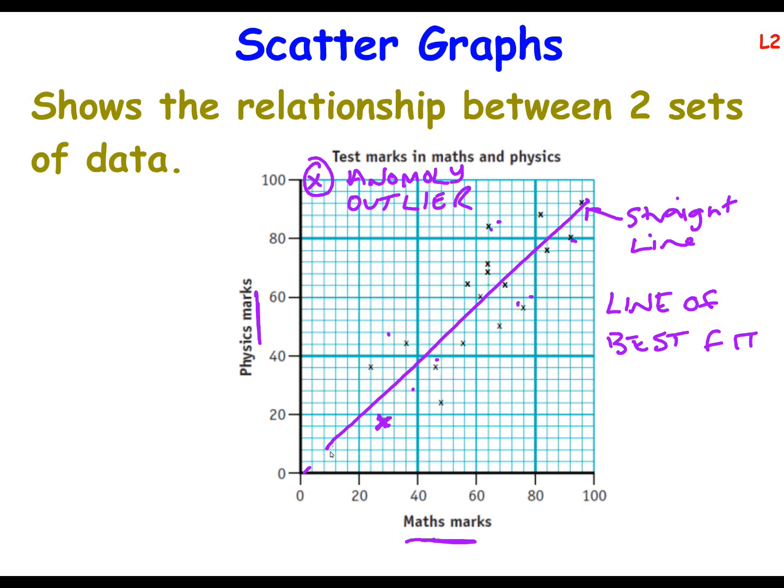Now this trend from the bottom left to the top right is called positive correlation. So the whole point of a scatter graph is, is there any correlation? Is there a relationship between being good at maths and good at physics? And here we can say there is, because our data tends to go from bottom left to top right. And we call that positive correlation.